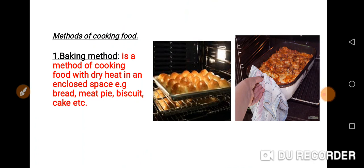Now let's discuss about different methods of cooking food. Baking method: it is the method of cooking food with dry heat in an enclosed space. For example, this is an oven.